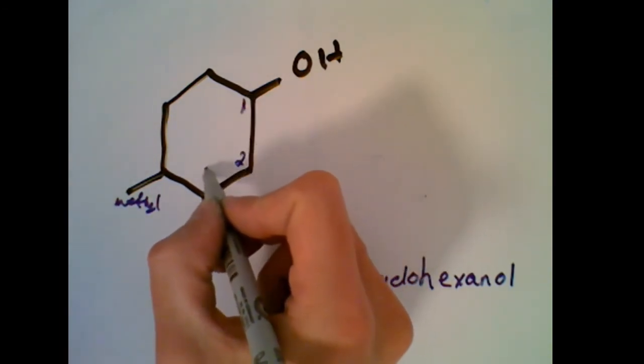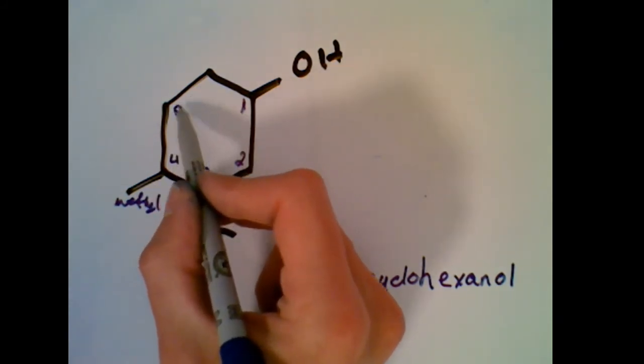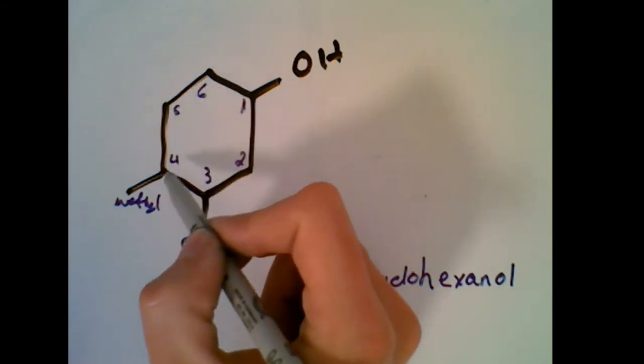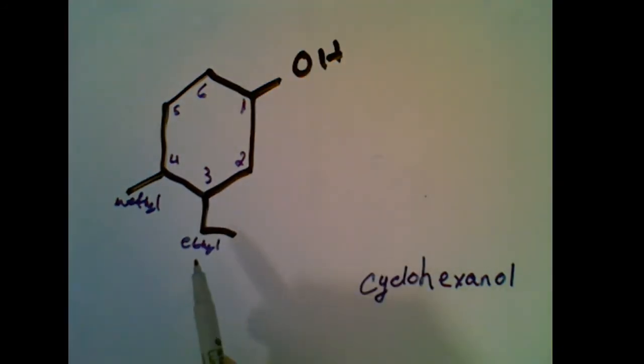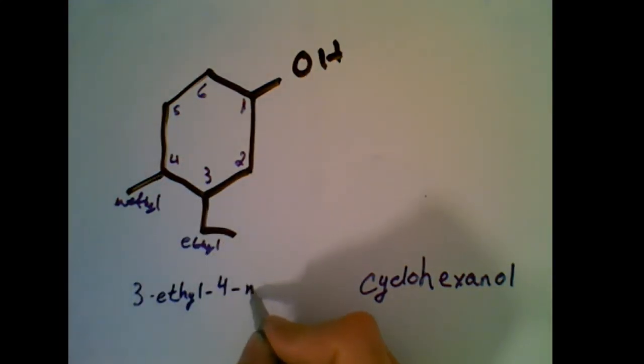You then have two, three, and four, as we then try and worry about keeping the lowest numbers here that we can. If we went this way, you would get four and five. So you have to go three and four. Now, in the very front of the name, ethyl is going to get named first. So we are going to have three ethyl, four methyl, and we have one cyclohexanol.